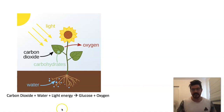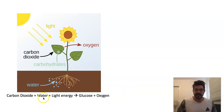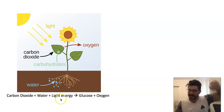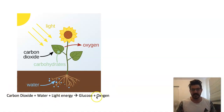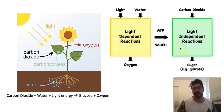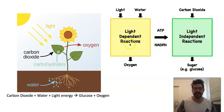The other thing to realize is that this equation isn't straightforward — these things don't just come together like a recipe, mix it all together, and then out pops some glucose and oxygen. There are actually two different reactions: a light-dependent reaction and a light-independent reaction, and these two occur at different places in the chloroplast.